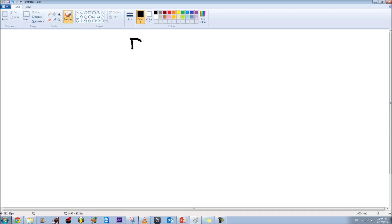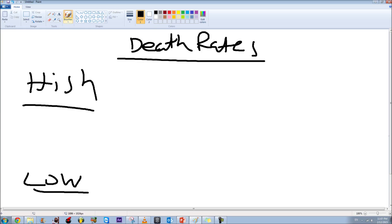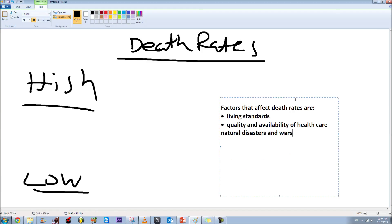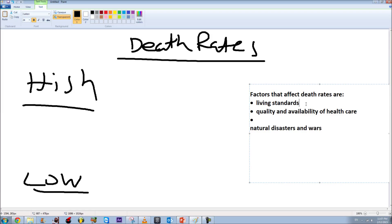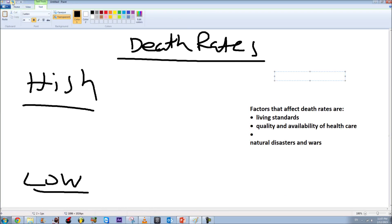So let me draw the title death rates. And as usual there are high death rates and there are low death rates. And factors that may affect the different death rates are number one living standards, and number two the quality and availability of healthcare, and number three the natural disasters and wars. Some of these link similarly to the birth rates as standard of living.